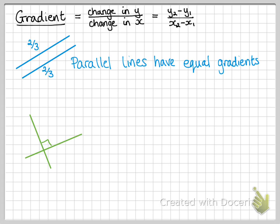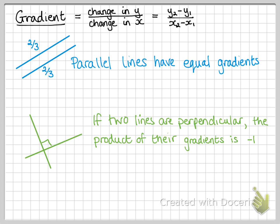And perpendicular lines, so lines that cross at right angles, they have the property that if they're perpendicular and you multiply the gradients together, the answer will be minus 1. You can also write this as the gradient of the second line will be the negative reciprocal of the gradient of the first line. So if that one had a gradient of 2 fifths, this one would have a gradient of negative 5 over 2.